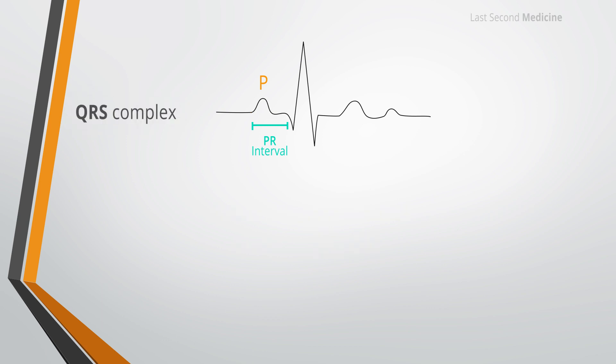After the delay in the AV node, the impulse then spreads to the ventricles, producing the QRS complex. With normal intraventricular conduction, depolarization occurs in an efficient and rapid fashion through the His-Purkinje system. The duration of QRS complex is measured in the lead with the widest complex and should not exceed 2.5 small squares, which is 0.10 seconds. Any delays in ventricular depolarization, for example bundle branch block, gives rise to abnormally wide QRS complex, more than 0.12 seconds.